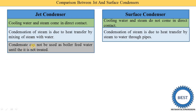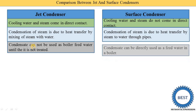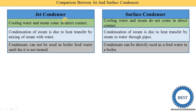Third point: in a jet condenser, the condensate cannot be used as boiler feed water until it has been treated — we need to treat the condensate before using it as feed water. In a surface condenser, the condensate can be directly used as feed water in a boiler; we can directly supply the condensate to the boiler using a pump.